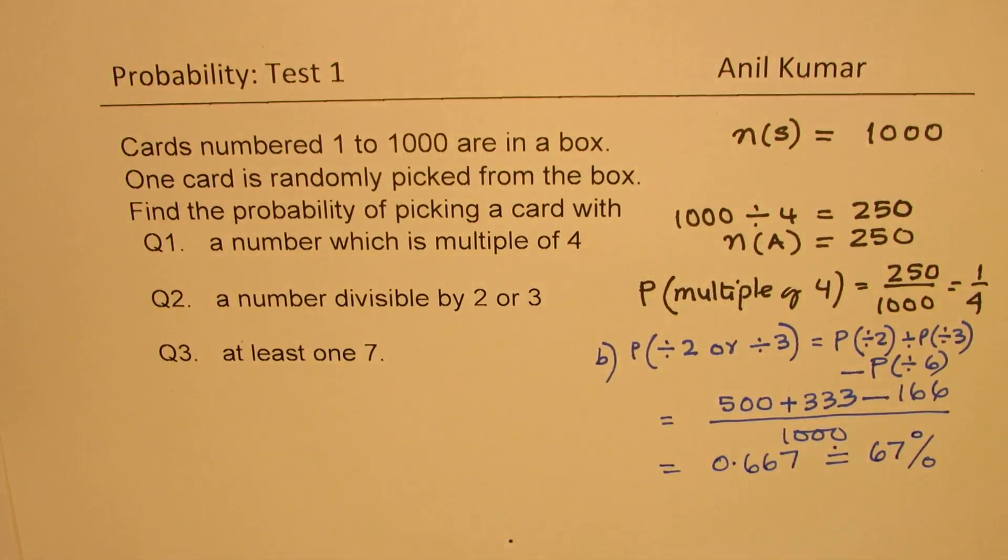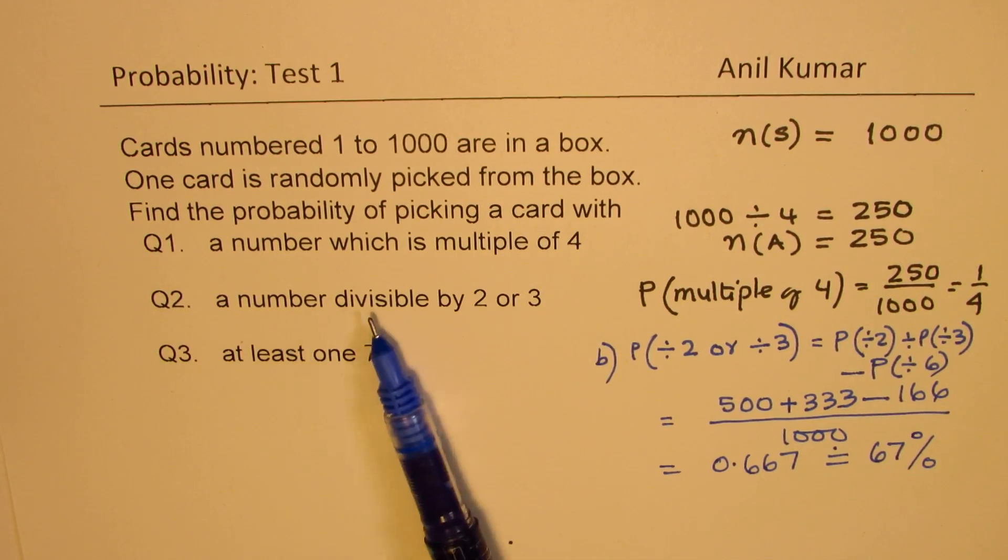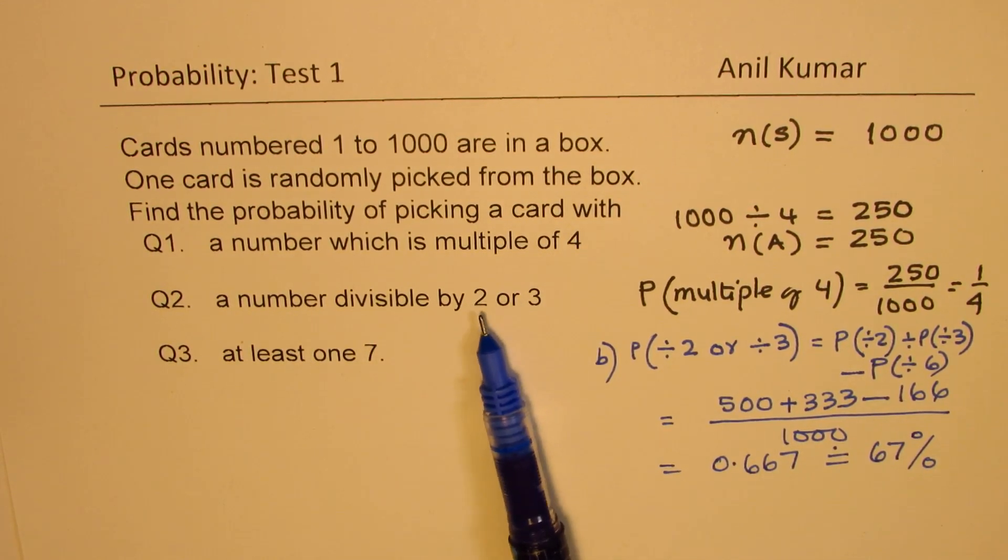Is that clear to you? So 67% are the cards with numbers divisible by 2 or 3. Perfect. So that's how we're going to answer this question.